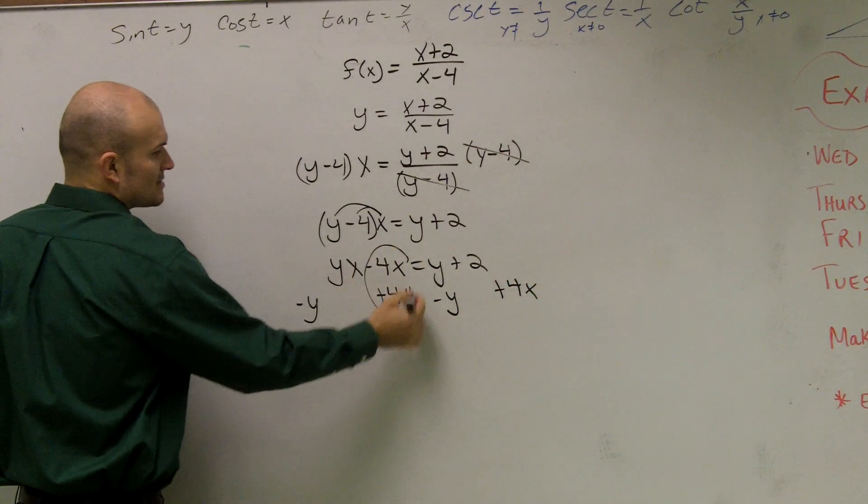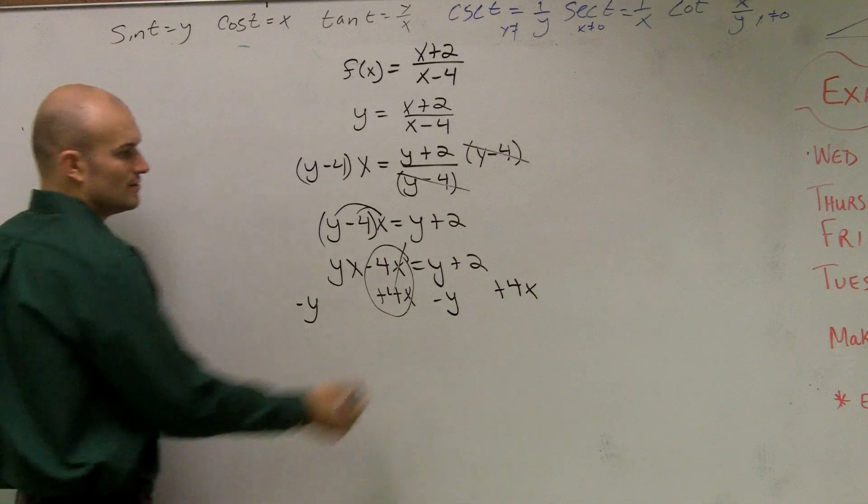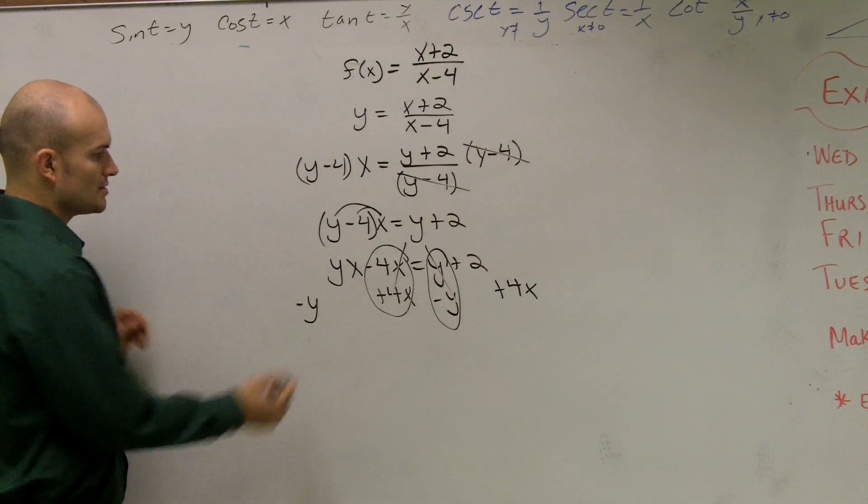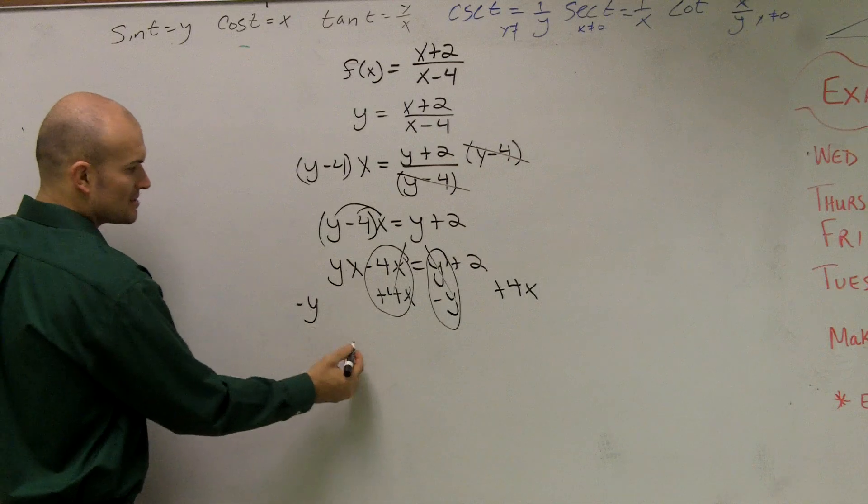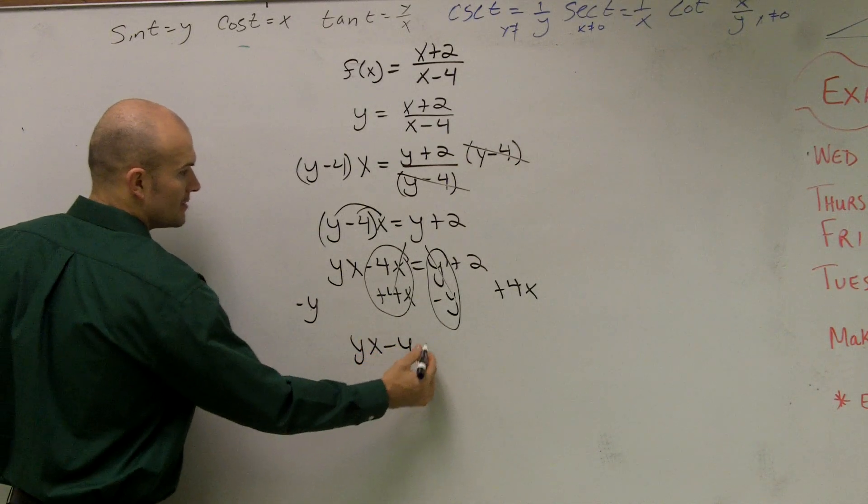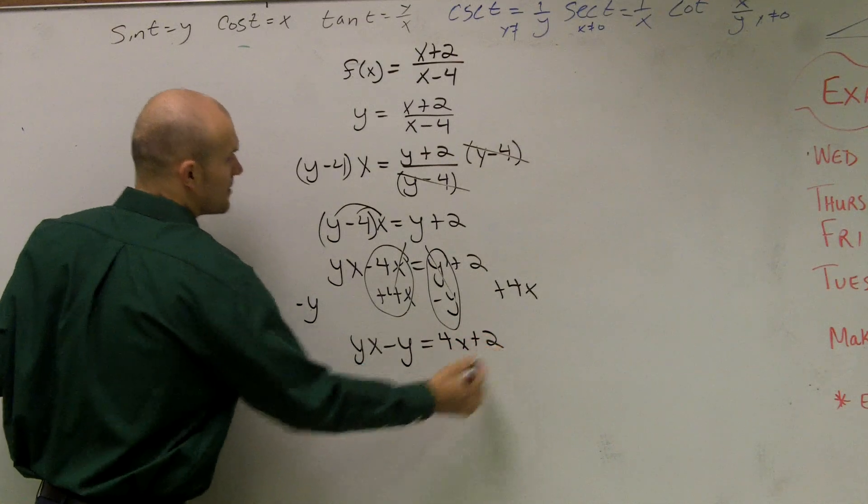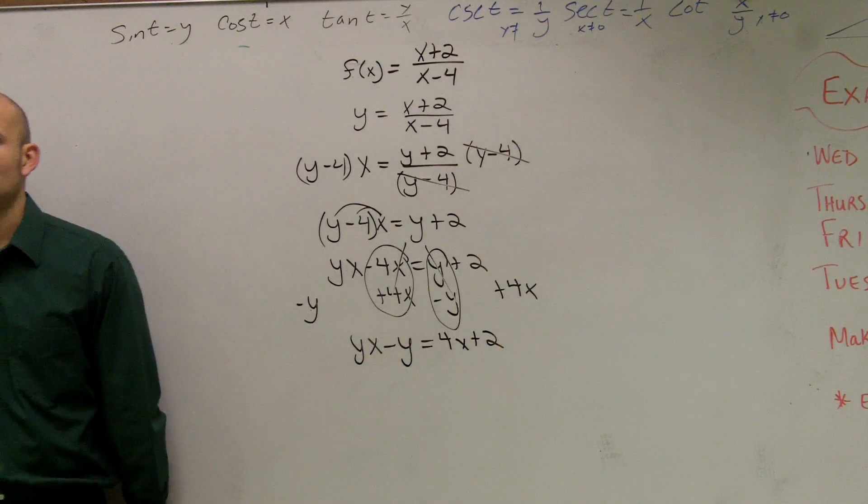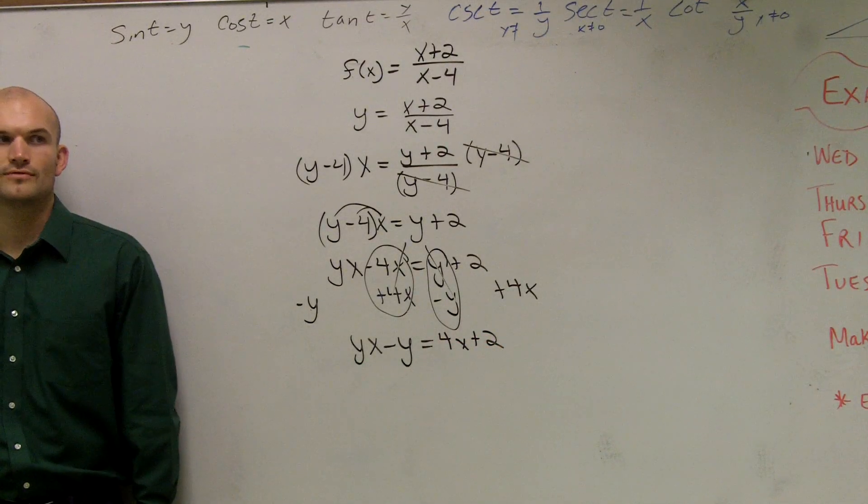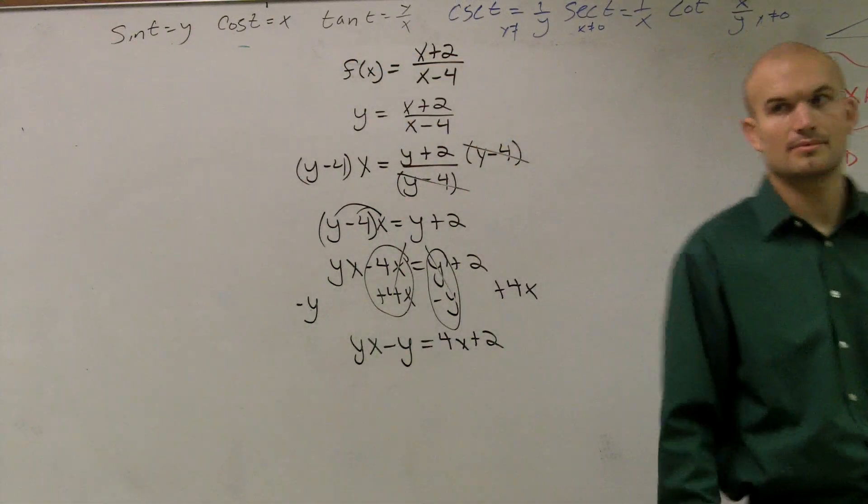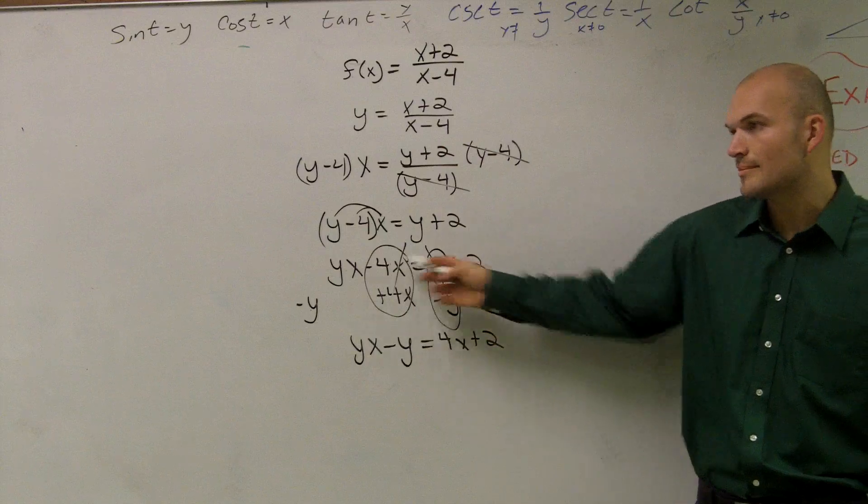So we say that these cancel out to zero and these cancel out to zero. So therefore, since these are not like terms, I obtain yx minus y equals 4x plus 2. Is everybody cool where I'm at? Questions? I just did two different steps here at the same time.